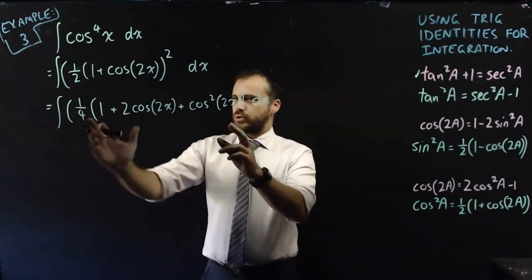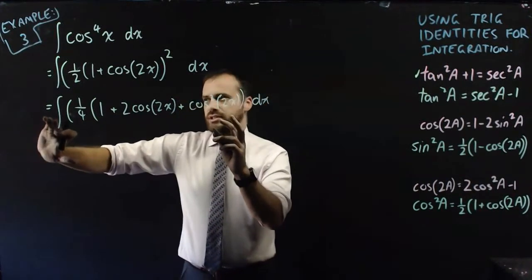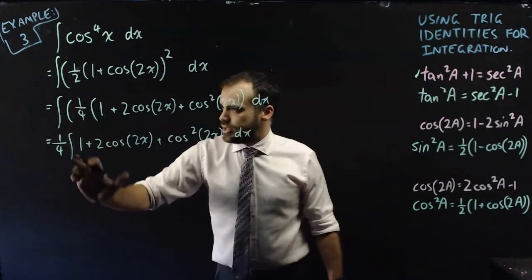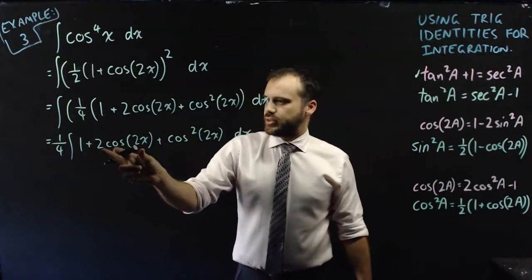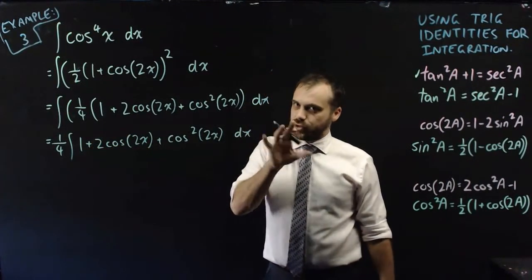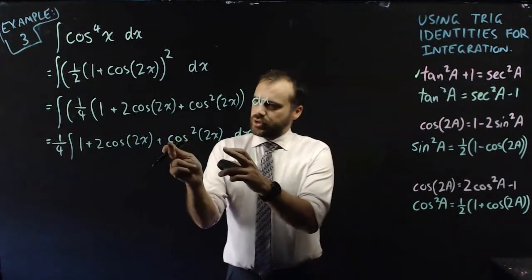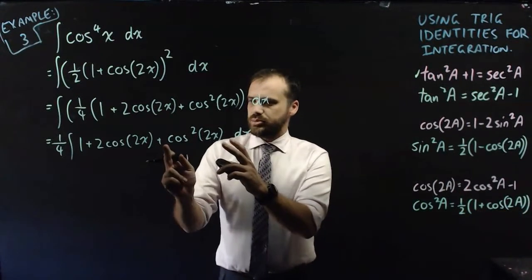And then all of that is still in that bracket being multiplied by a quarter, and we've got our respect to x. Now because that quarter is being multiplied by all of that, I can bring it outside of the integral for safekeeping. So stop and take stock for a second. You've got an integral. You could integrate that, that would be x. You can integrate that because that's cos to the power of one, and you know how to integrate those. What you can't integrate is that. And so what we're going to do is take that and apply this identity just to this bit here.